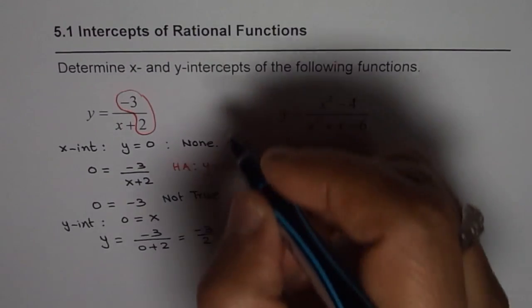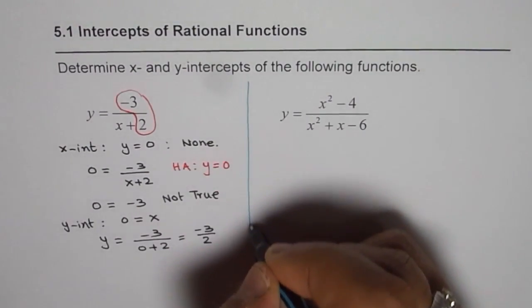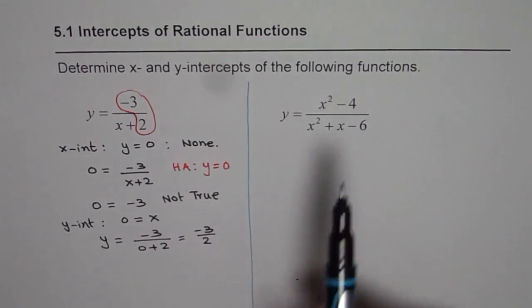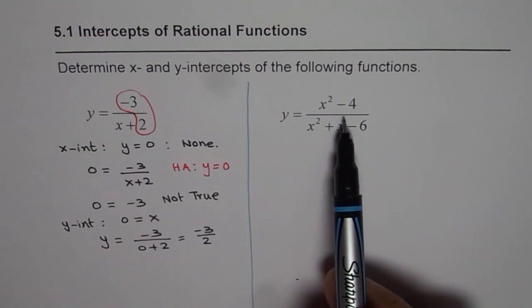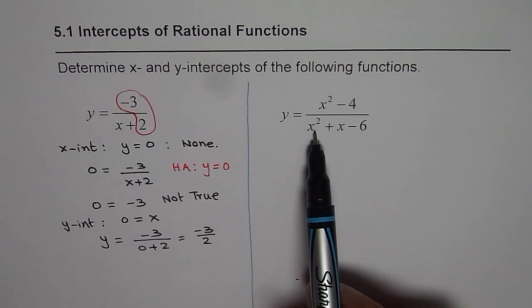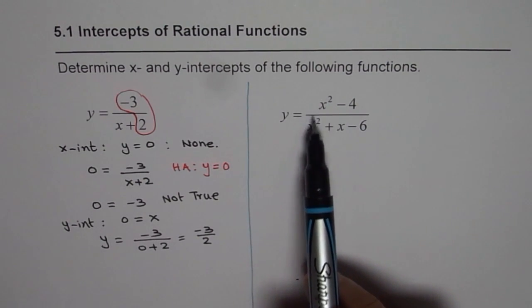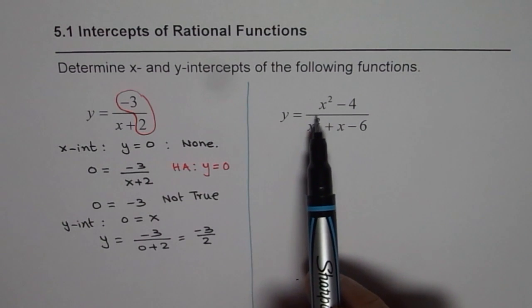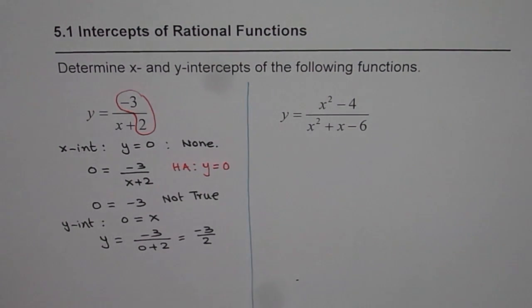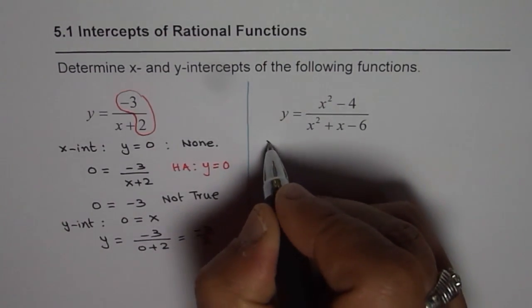Now let us take up the next example. In this case we have a polynomial function whose numerator and denominator degrees are same. In such a case we have a different horizontal asymptote which is 1. So in this case we expect to have x and y intercepts. Let us calculate. So let us begin with x intercepts.